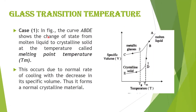Case 1: The curve ABDE shows the change of state from molten liquid to crystalline solid at the temperature called the melting point temperature TM. This occurs due to a normal rate of cooling with a decrease in specific volume, thus forming a normal crystalline material.